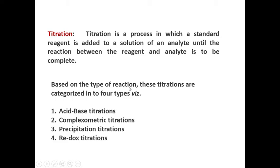Based on the type of reaction between the reagent and analyte, titrations are categorized into four types: acid-base titrations, complexometric titrations, precipitation titrations, and redox titrations. In acid-base titrations, we observe the neutralization of acid by base with the help of acid-base indicators. The commonly used indicators in our laboratories are methyl orange, methyl red, and phenolphthalein, which help determine the end point or equivalence point.